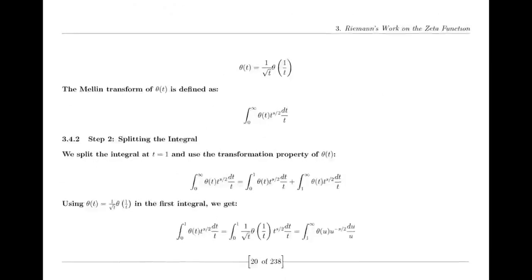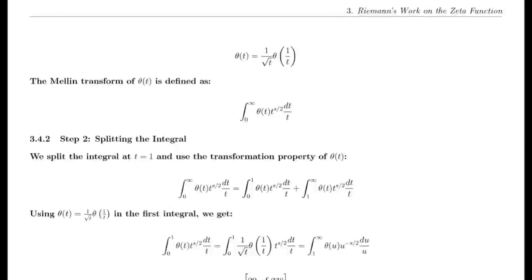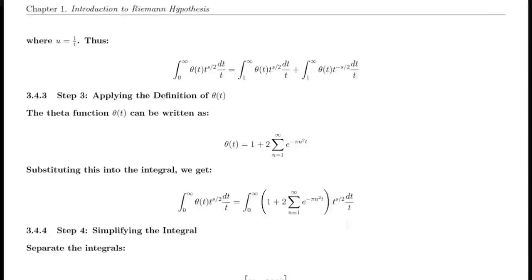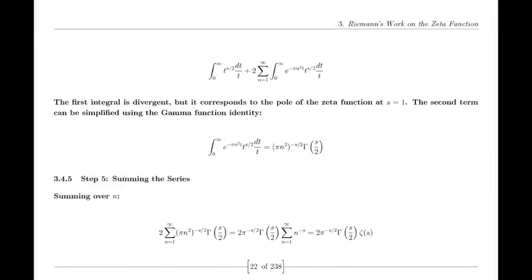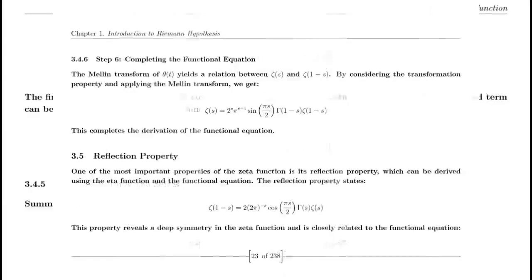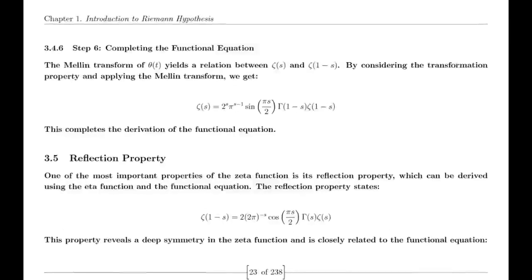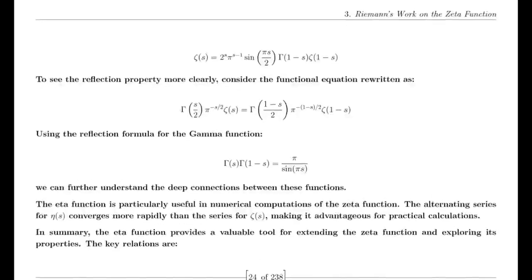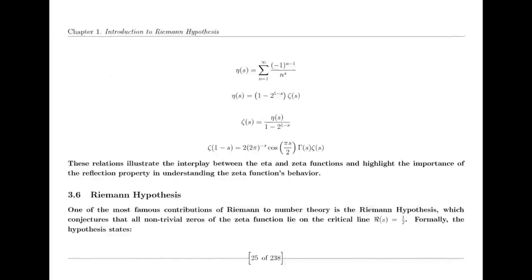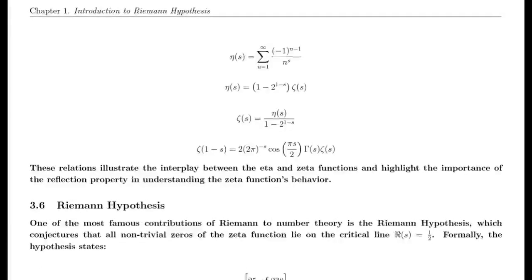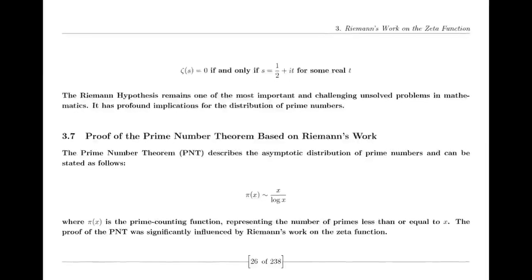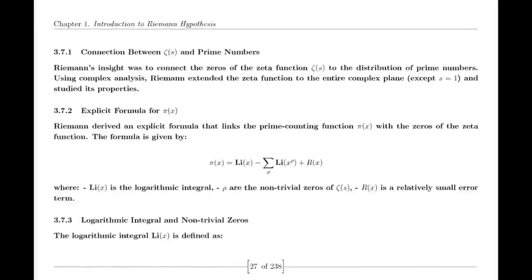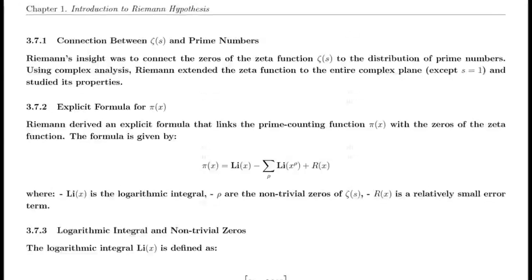These π/3 or π/6 angles are particularly noteworthy in the context of the Riemann hypothesis, which concerns the zeros of the Riemann zeta function lying on the critical line where the real part of s is one-half. If we project these angles onto the complex plane, the unit circle intersects the critical line at specific points corresponding to these π/3 or π/6 intervals. This alignment illustrates the relationship between geometric angles and the behavior of complex functions, serving as a bridge between the unit circle's geometry and the analytical properties of the zeta function.